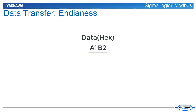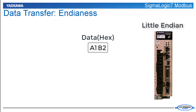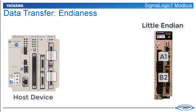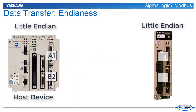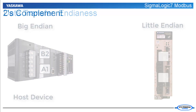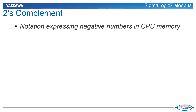The Sigma Logic 7 Modbus stores data in little-endian format, meaning the least significant byte of data is placed in the lowest number register, sometimes called the base register. All provided documentation will reference the data in little-endian format. If the host device also stores data in little-endian format, the user will not need to rearrange the data. However, if the host device stores data in big-endian format, then data sent across the Modbus TCP interface will be stored with the most significant byte in the lowest number register. This reordering of data in memory requires extra handling by the user, and examples will be described later in this video.